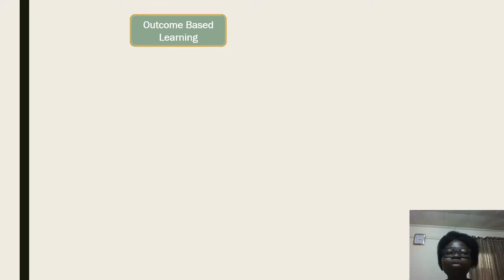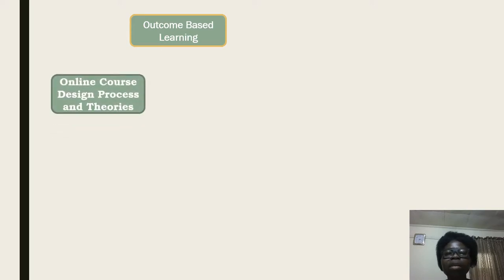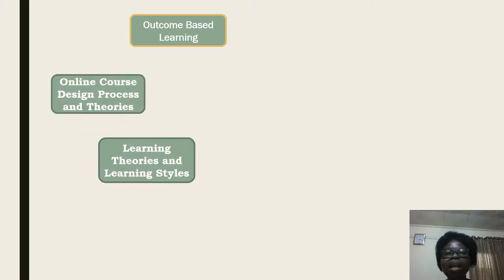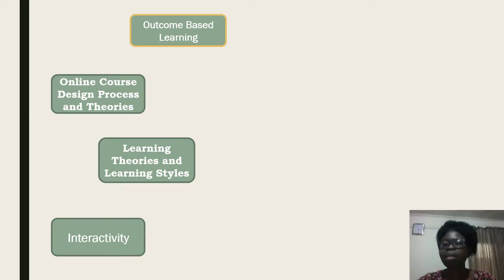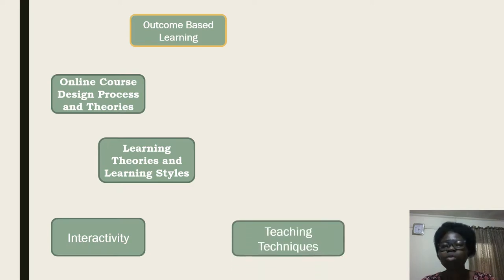Having done that, you have to decide on the learning theories and the learning styles that the students will need. The learning process and learning theories — we have discussed that, go back and look at it. You will also have to look at the interactivity and define the means of what you will use as your interactivity that will make the student understand.